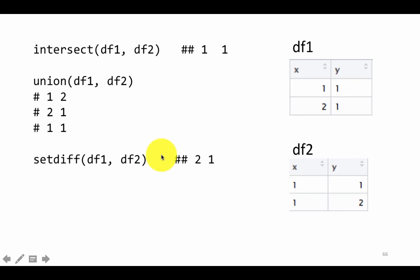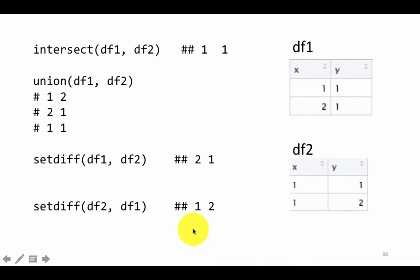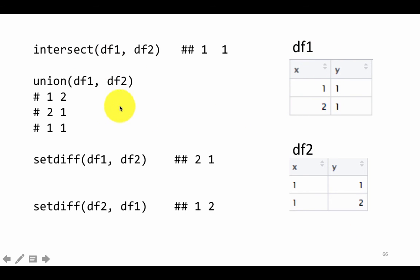Set difference — setdiff(df1, df2) — tells you the rows which are in df1 but not in df2. (1,1) is in both, so it doesn't appear; (2,1) is in df1 but not in df2, so it appears in the result. You can also do setdiff(df2, df1): (1,1) is in both so it doesn't appear, but (1,2) is in df2 and not in df1, so that's the result. Set difference operations are sometimes useful, though admittedly rarely, because they only work when both data frames have identical structure — which rarely happens in practice.